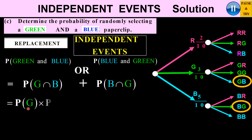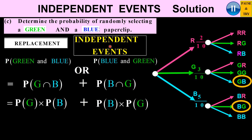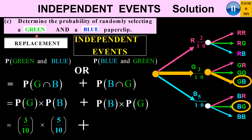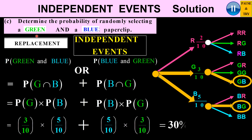Because we have independent events, the probability of green and blue becomes the product of the probability of green with the probability of blue. Similarly, the probability of blue and green is the probability of blue times the probability of green. Probability of green is 3 over 10 and probability of blue is 5 over 10. Adding the two products gives a probability of exactly 3 over 10, or 30%.